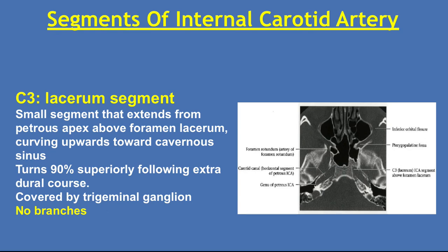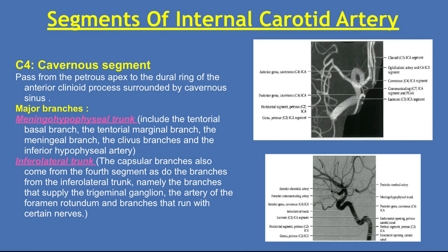Lacerum segment: a small segment that extends from the petrous apex before the foramen lacerum, curving upwards towards the cavernous sinus. The turn is 90 degrees superiorly, following an extradural course, covered by the trigeminal ganglion. No branches. Cavernous segment: from the petrous apex to the dural ring of the anterior clinoid process, surrounded by the cavernous sinus. Major branches include the meningo-hypophysial trunk, which includes the tentorial basal branch, the tentorial marginal branch, the meningeal branch, the clival branch, and the inferohypophysial artery.